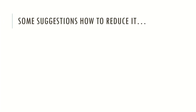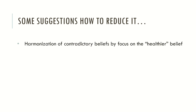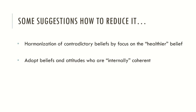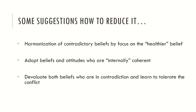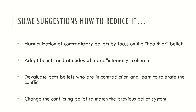Some authors gave suggestions about how to reduce cognitive dissonance. One is harmonization of contradictory beliefs by focusing on the healthier belief. Another suggestion is to adopt beliefs and attitudes that are internally coherent. Another is to devalue both beliefs that are in contradiction and learn to tolerate the conflict. And the final suggestion is to change the belief to match the previous belief system. As you can see, there is an increasing level of difficulty in applying these suggestions to oneself — changing beliefs is typically not an easy task.